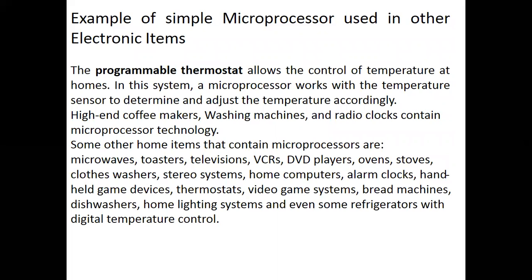The programmable thermostat allows the control of temperature in the home. In this system, a microprocessor works with the temperature sensor to determine and adjust the temperature accordingly. Another example is the high-end coffee maker. These devices use a simple, low-cost microprocessor so that the function will be carried out.